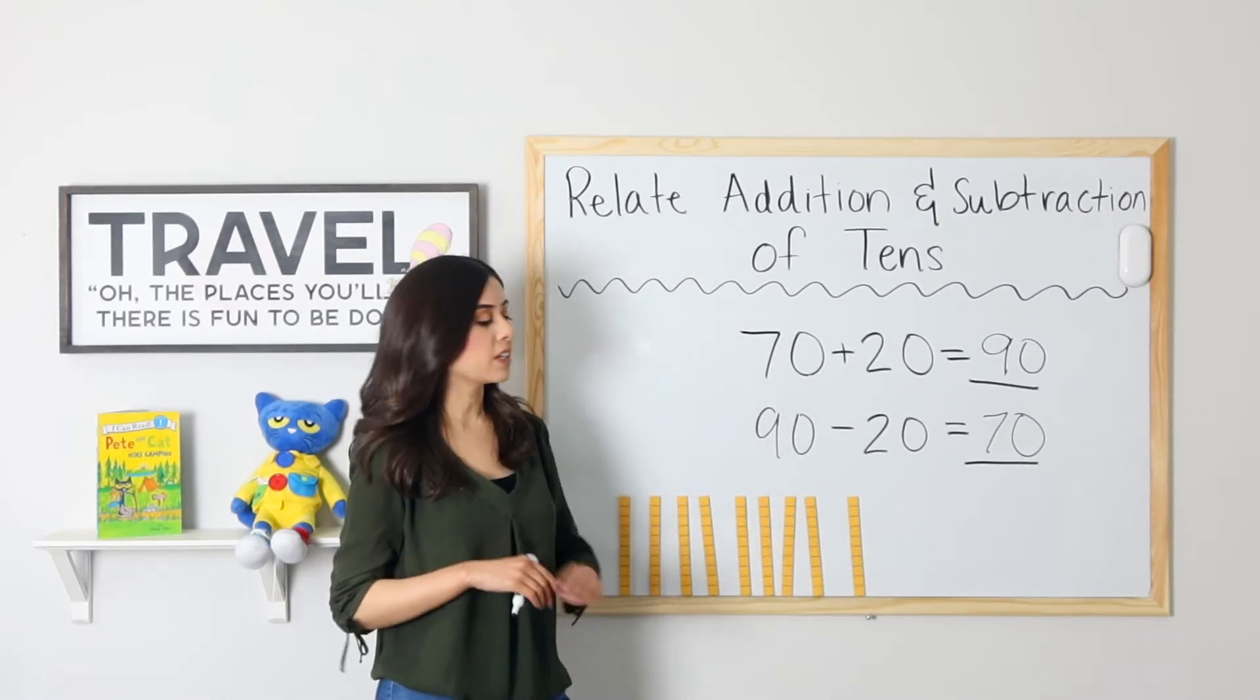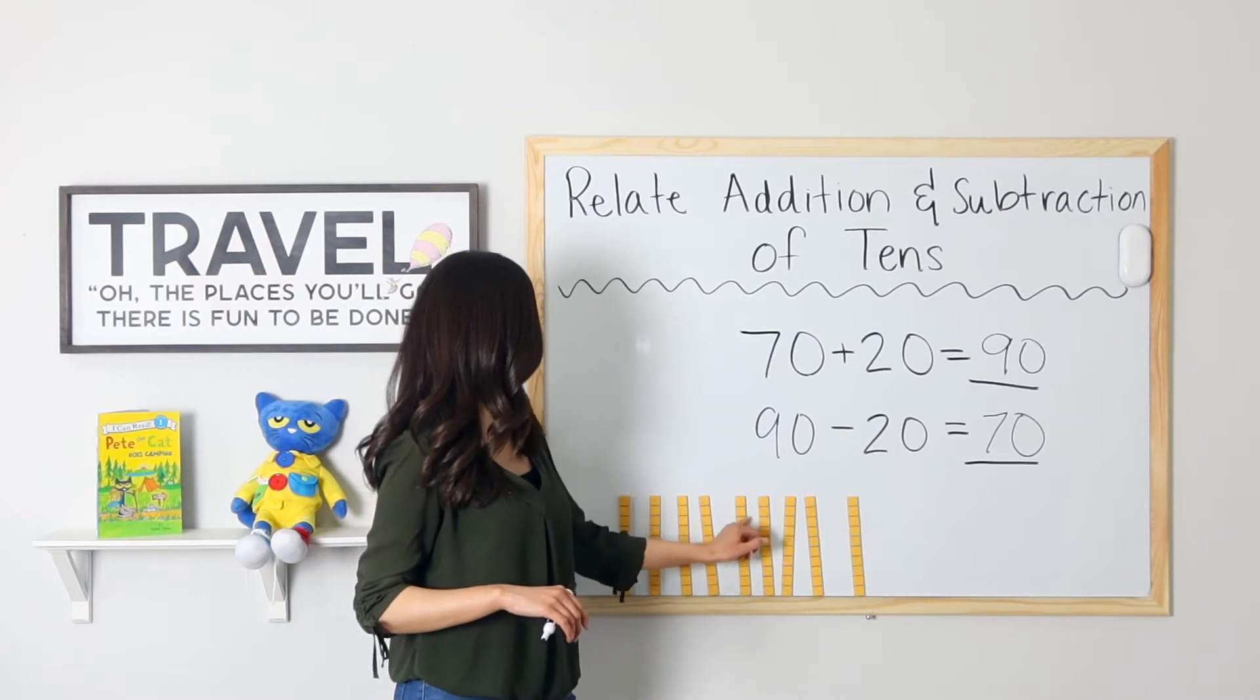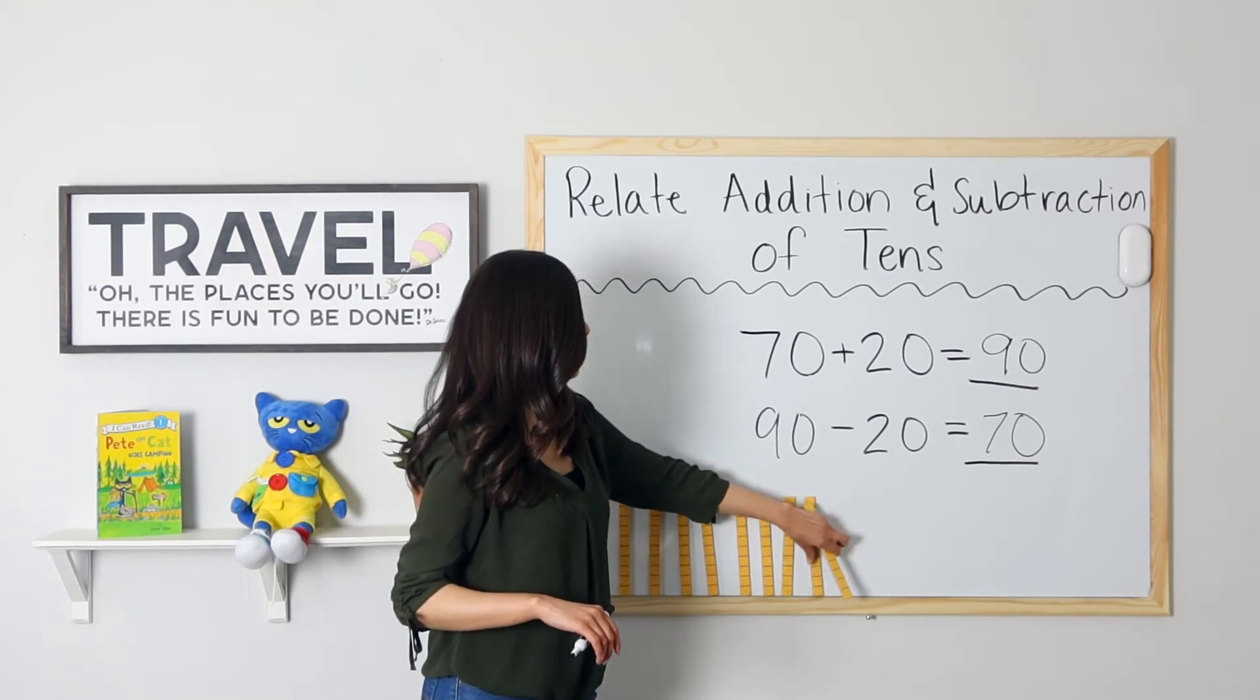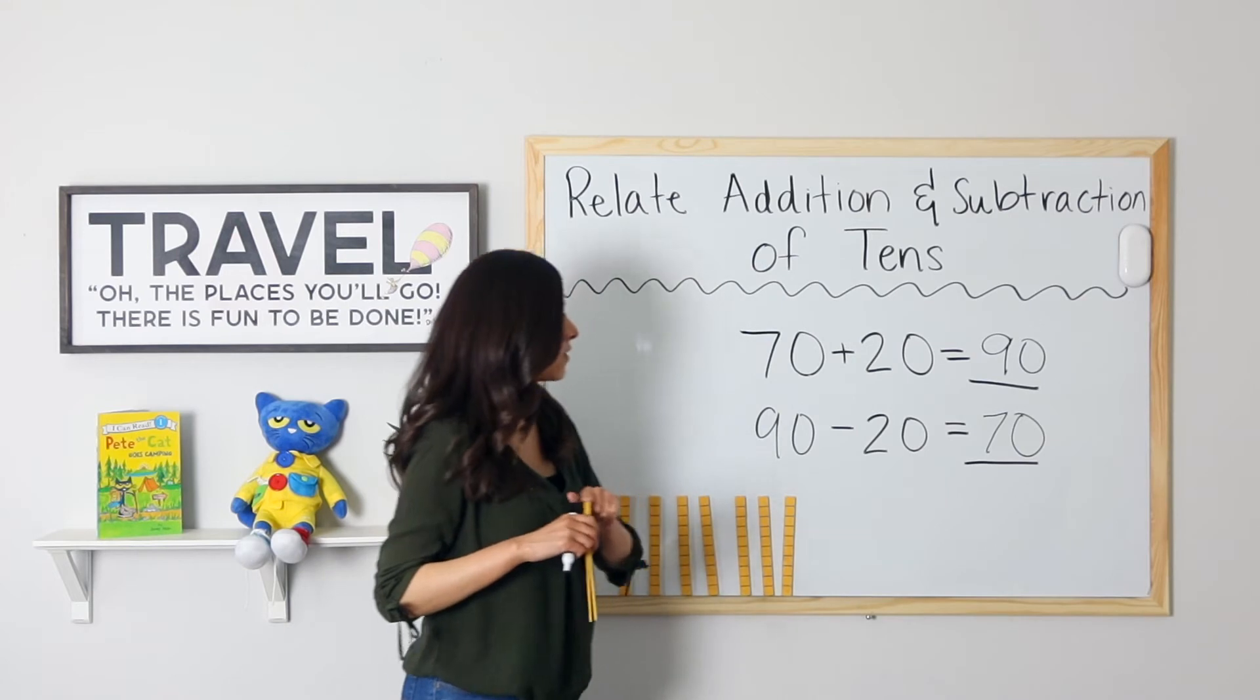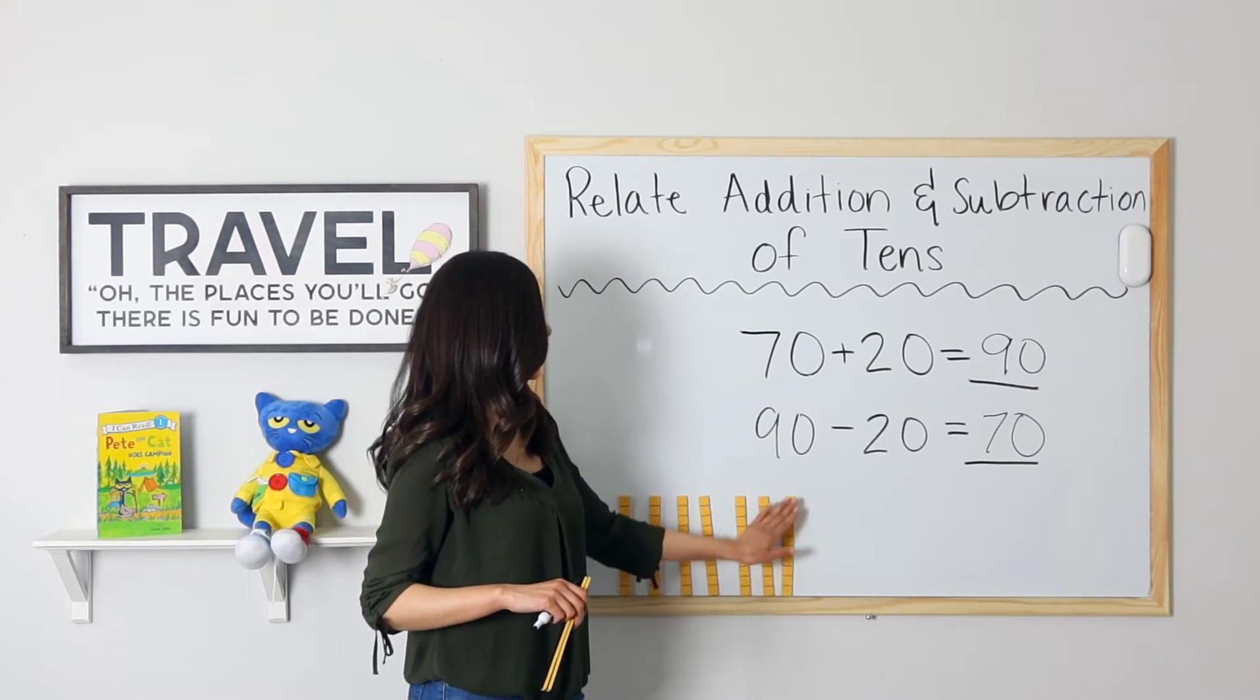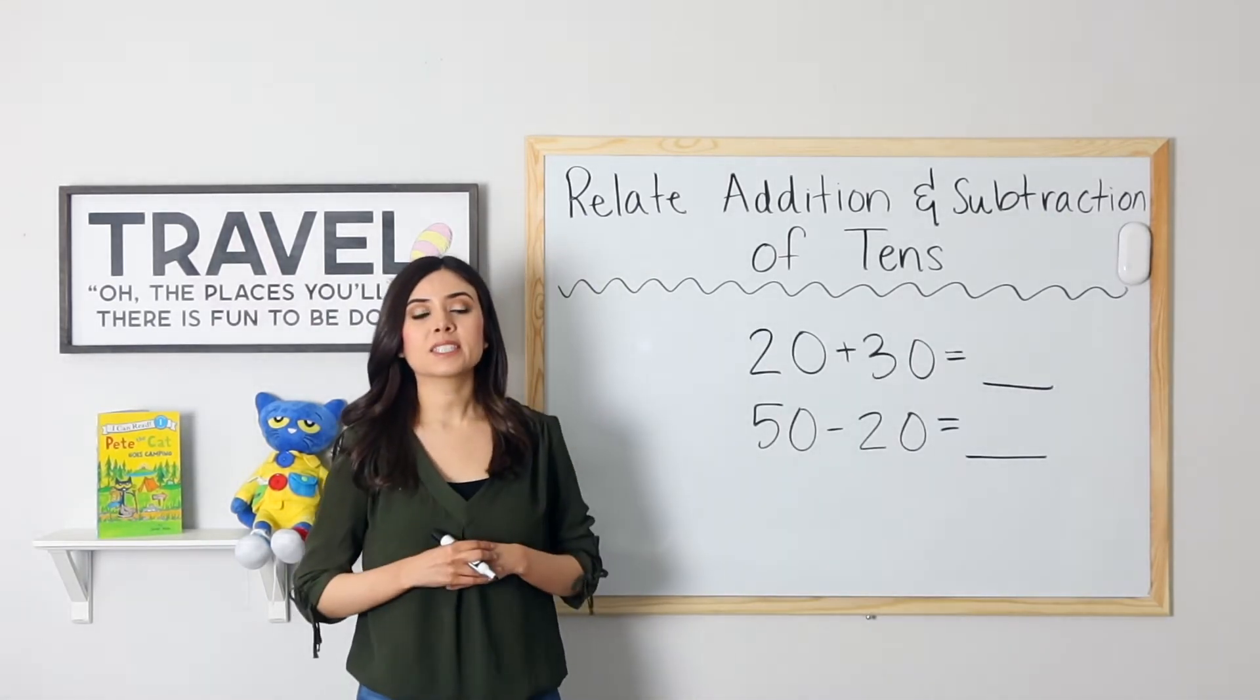Very good. To prove this, I have 90 units. 10, 20, 30, 40, 50, 60, 70. I will take away 20, 10, 20, and make sure that I ended with 70. 10, 20, 30, 40, 50, 60, 70. Yes, this is correct.